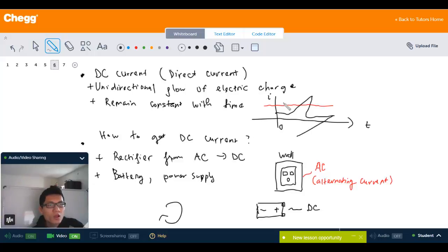So the question is how do we get a DC current? We can get a DC current by something called a rectifier, which converts AC to DC. AC is the alternating current. Where do we get the alternating current? If you look at the socket inside a wall, this socket is generating the AC current.